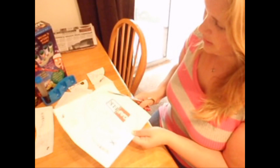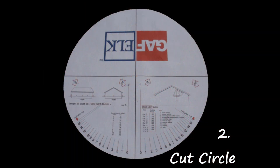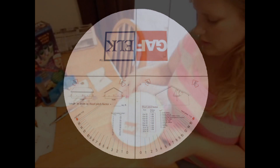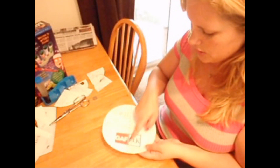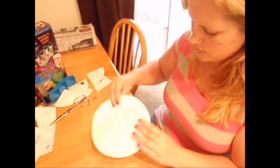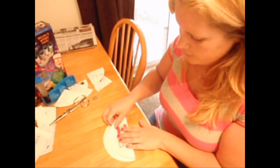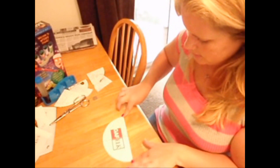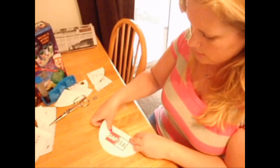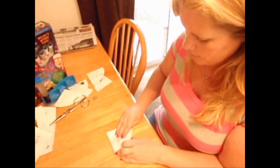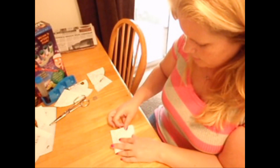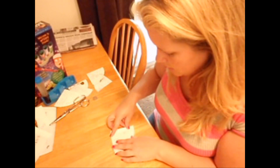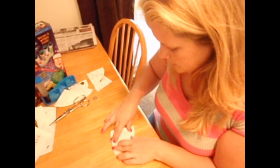You just cut along the circle. Next, you see the lines — all you have to do is flip it over and fold it along the lines. Fold it again right along the lines.